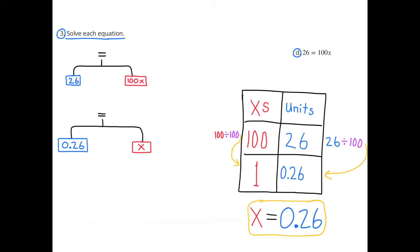D, 26 equals 100x. Again, in the table, I have the x's on the left and the units on the right. 100x's divided by 100 equals 1x. I also have to divide the units by 100. 26 divided by 100 equals 26 hundredths.